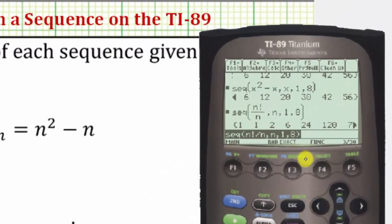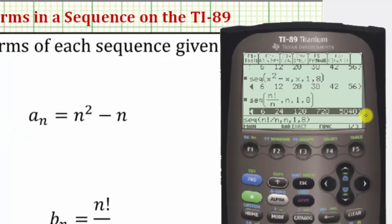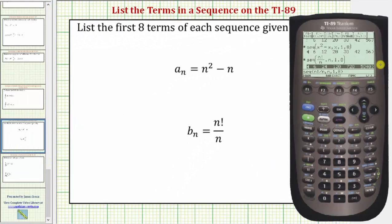And now we have the first eight terms of b sub n. Terms are one, one, two, six, twenty-four, one hundred twenty, seven hundred twenty, and five thousand forty. I hope you found this helpful.